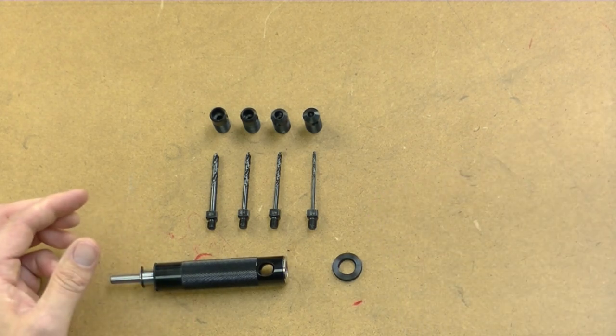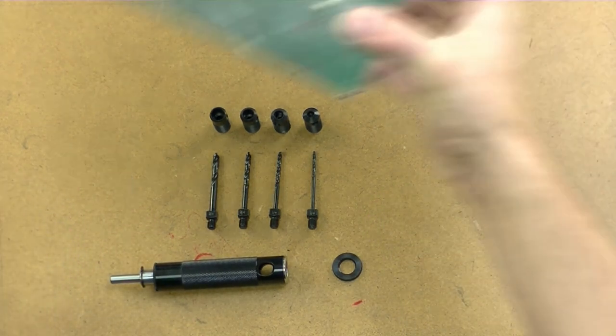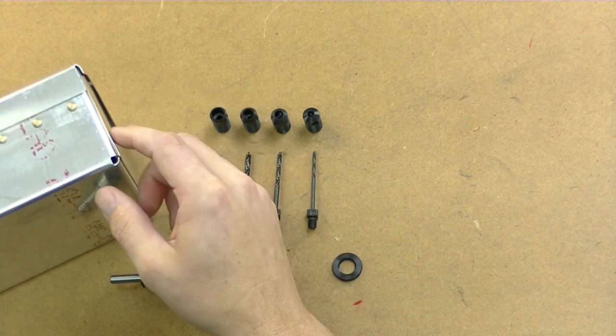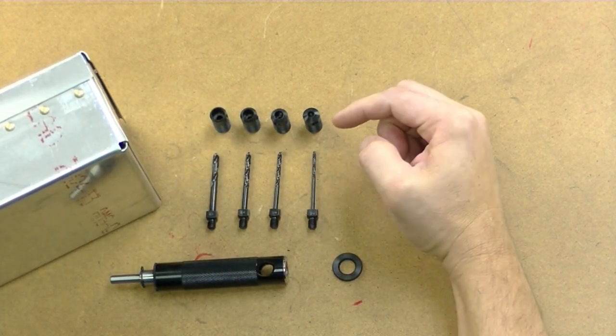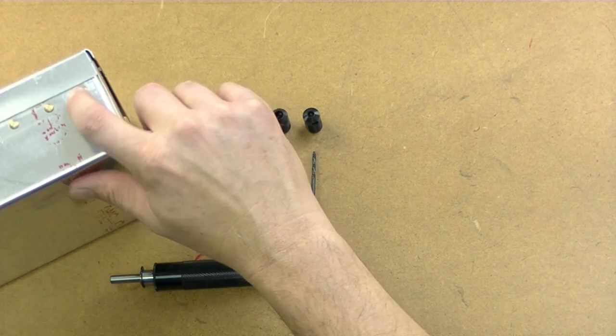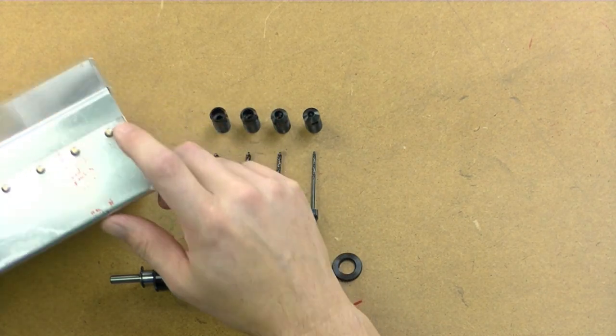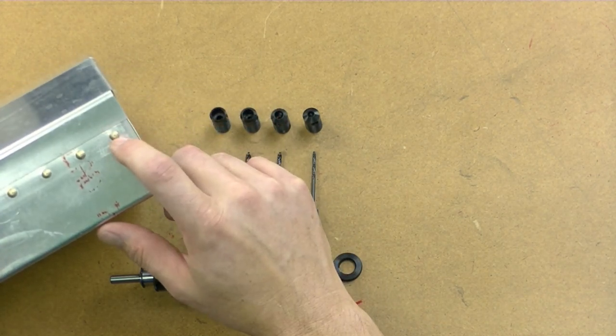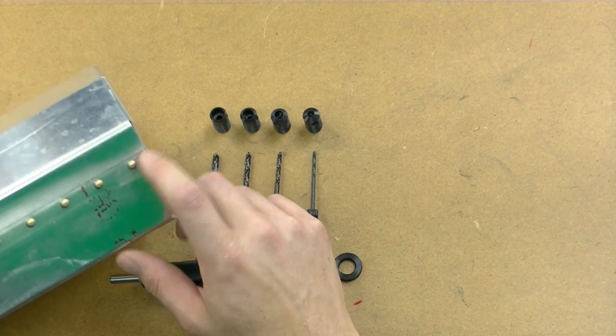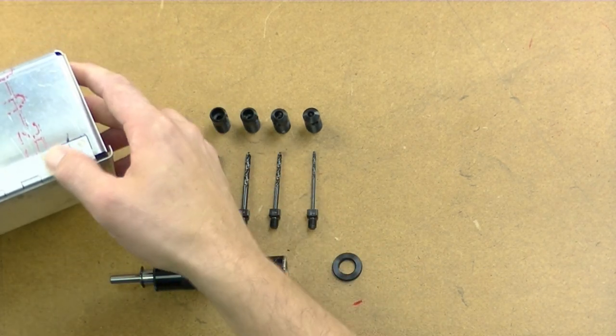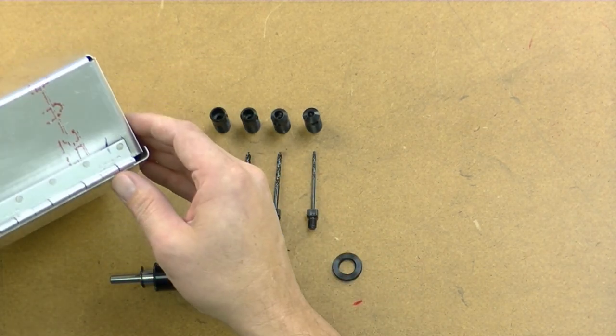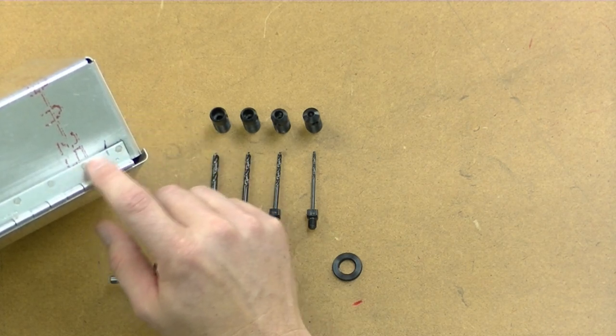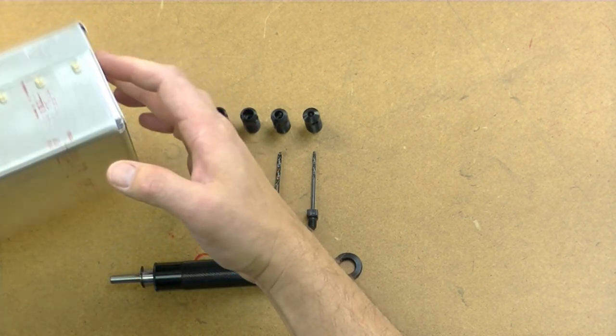First of all, you want to choose the correct piece for the rivet that you're going to drill out. Now, this rivet removal tool is only for domed rivets, button head rivets, AN470 rivets, depending on what terminology you want to use, not for the flush rivets. Flush rivets are easy to drill out without a rivet removal tool, and I can show you how to do that in another video.